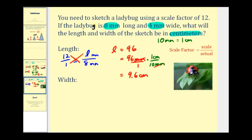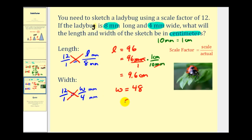Now let's do the same for the width. The only difference is that instead of eight millimeters we have four millimeters. So twelve over one must equal the width W over four millimeters. Cross products give W equals twelve times four, which is forty-eight millimeters. Multiplying by one centimeter over ten millimeters, the millimeters cancel out, giving forty-eight divided by ten. So the scaled width is four point eight centimeters.